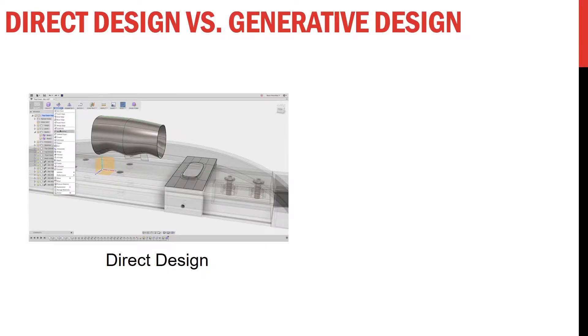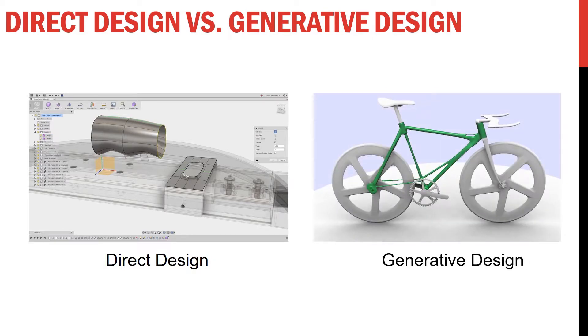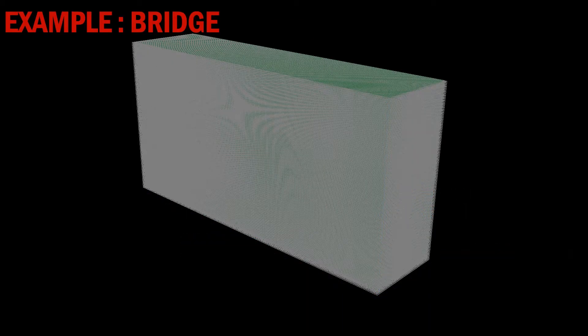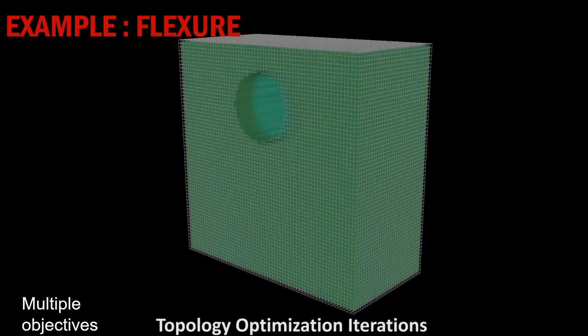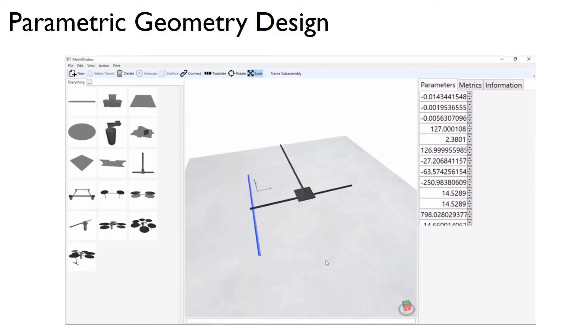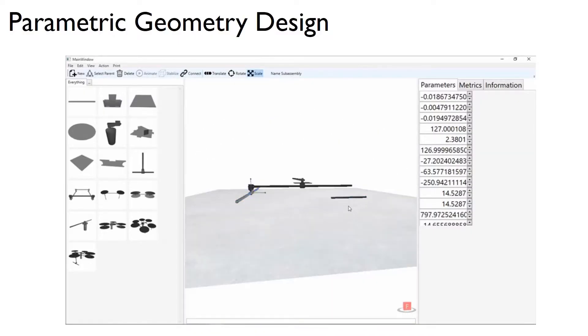I will also introduce you to generative design. In generative design, rather than specifying objects material and shape, we are going to specify objects function and then automated tools are going to figure out the shape and material properties. So this is a radically new way of approaching design.